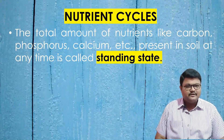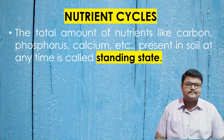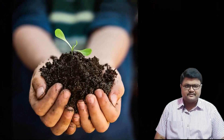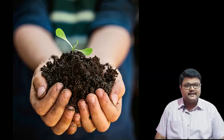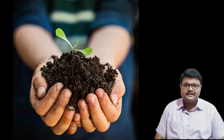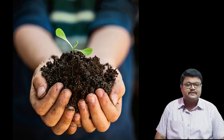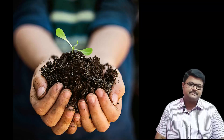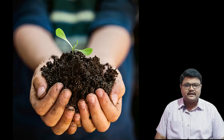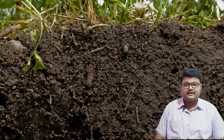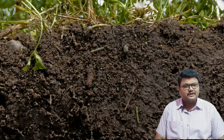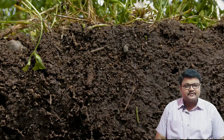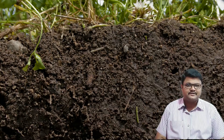I already mentioned 'standing crop' in previous videos. Today's term is 'standing state.' The total concentration of any nutrient — carbon, sulfur, phosphorus, nitrogen — present in a given soil or area is called the standing state. Some soil conditions are very rich in composition, while some soils don't have many nutrients. When we say soil is rich, it indicates a high presence of nutrient concentrations.